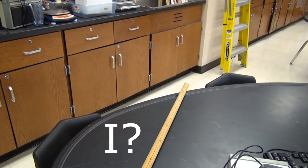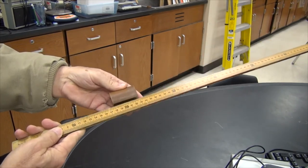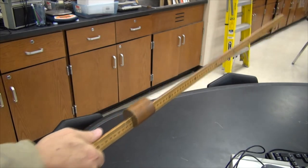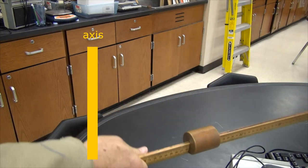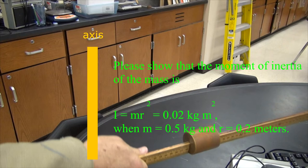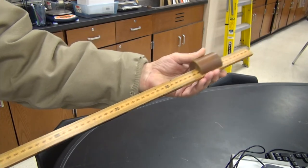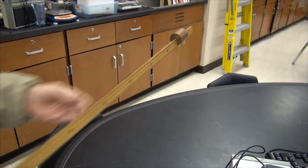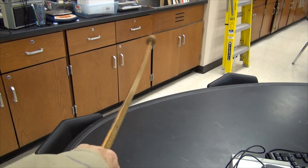The quantity I has no meaning until you use your own muscles to make an object spin faster. Place a 500 gram weight at the 20 centimeter mark on the meter stick, and then try to make the meter stick and the weight spin faster about the axis shown. Please show that the moment of inertia of the mass is I equals 0.02 kilogram meter squared, when the mass is 500 grams and the distance is 20 centimeters. This is the physical meaning of the moment of inertia I.